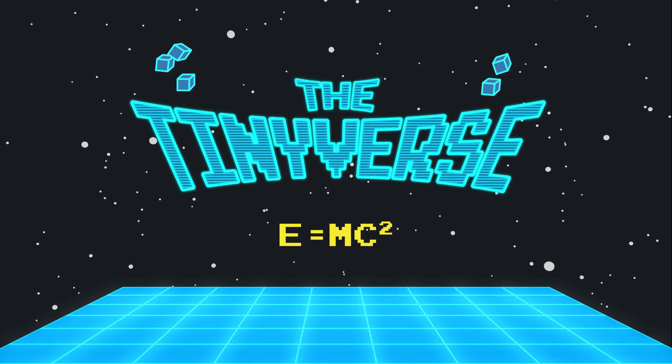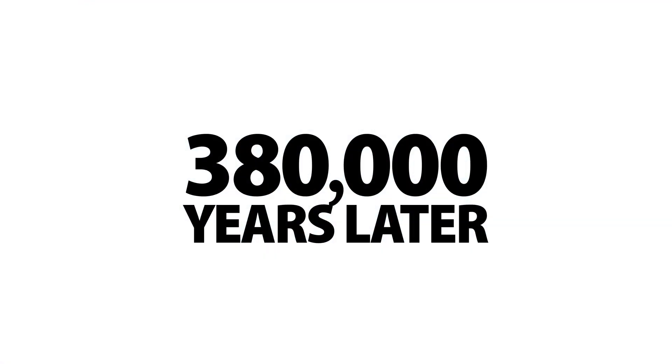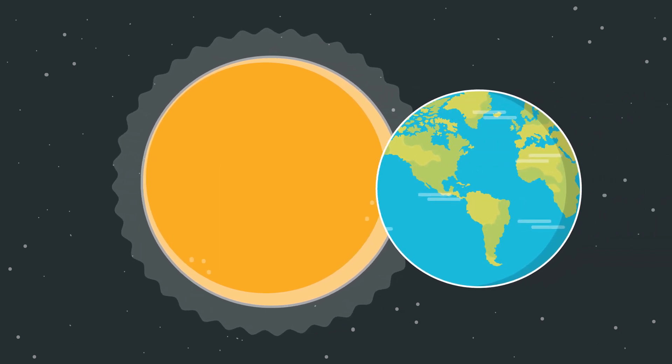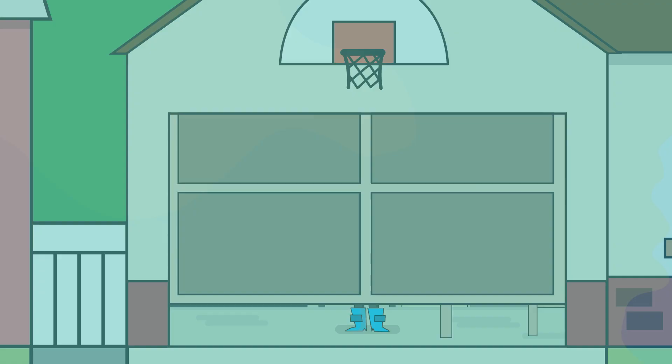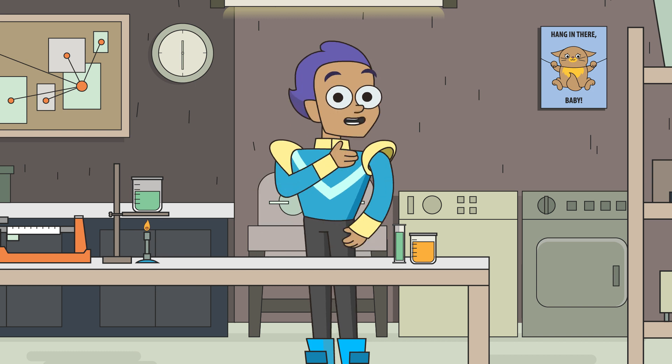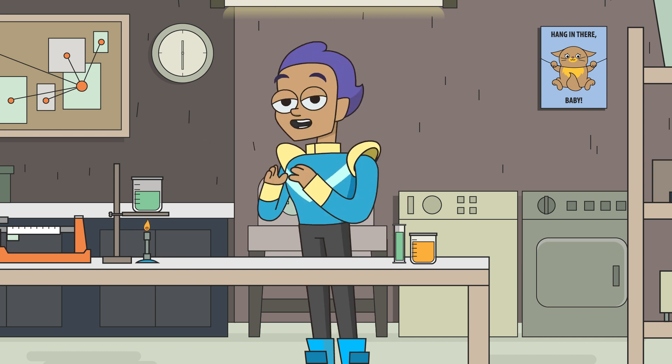Our universe began with a massive explosion. We call this the Big Bang. Energy raced outward in every direction. Heat and light spread as the boundaries of space itself expanded. In the chaotic energy of the early universe, there was no matter — nothing you could touch. Over the next 380,000 years, that energy cooled and atoms began to form, turning into gas clouds that would coalesce to form stars, planets, and eventually, us. The atoms that make up everything around us were born from the energy of the Big Bang.